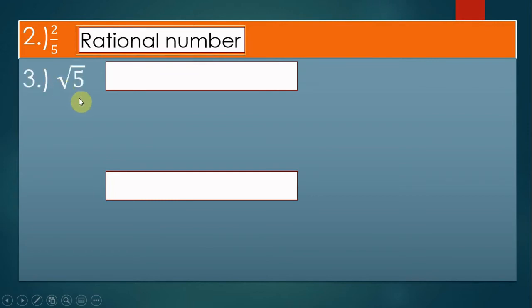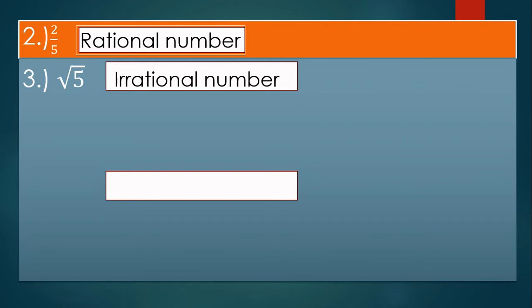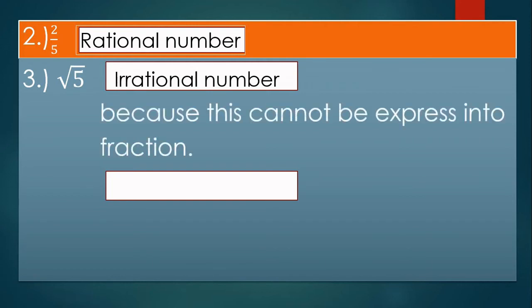Third example: square root of 5. Can we express the square root of 5 as a fraction? No, we cannot. Therefore, the square root of 5 is an irrational number, because we cannot express it as a fraction. It does not have an exact value and cannot be expressed as a fraction.